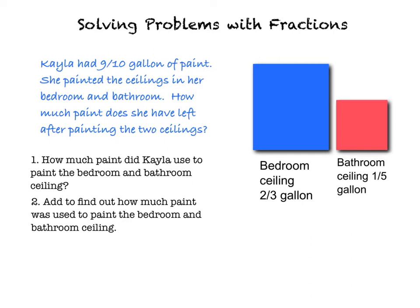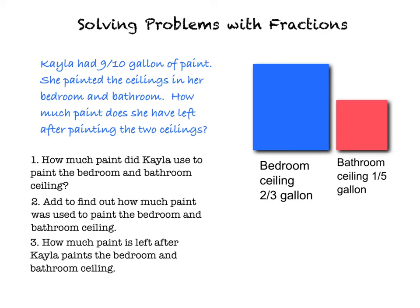There's still one more thing I have to do. The last thing I'm going to do is figure out how much paint is left over after Kayla paints the bedroom and the bathroom ceiling. Remember, the word problem says I have nine tenths and it wants to know how much paint does she have left after painting the two ceilings. I know how much paint I'm going to have to use to paint both of them, but then I have to take that answer and subtract it from nine tenths. We're going to put it all together right now.